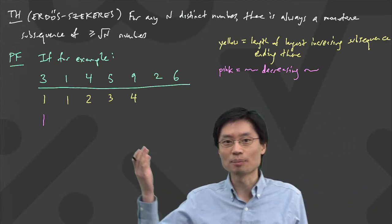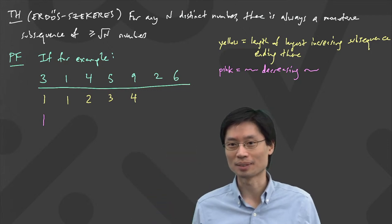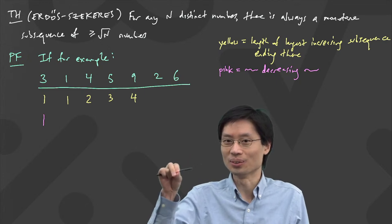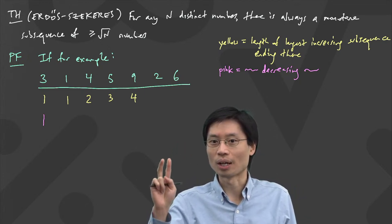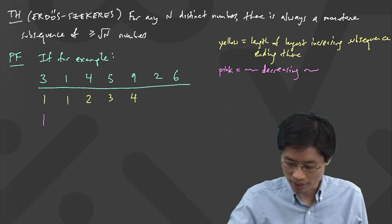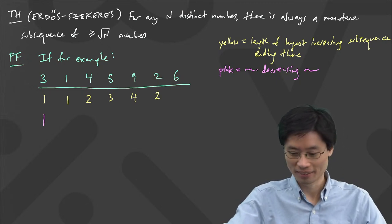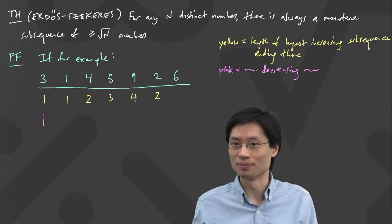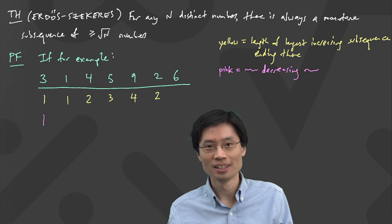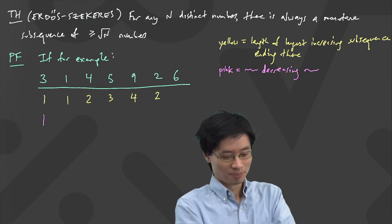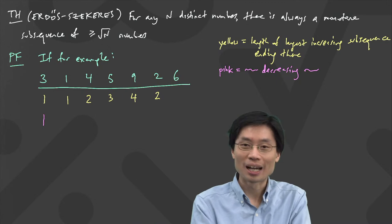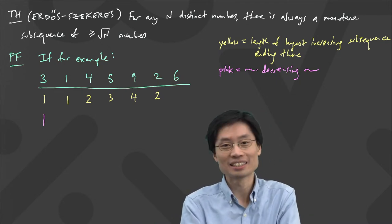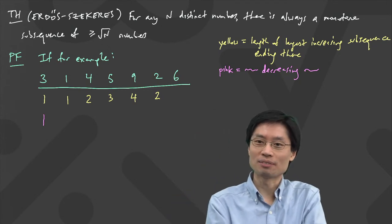The length of the longest increasing subsequence that ends at the two — here's where it becomes interesting. It's only two. You have to end at the two. The important thing is it ends at that number, that's why it's only two, not four. And then how about the six? It's a bit painful to manually go through and see how long a sequence ends at the six, so let's see if we can do this in a more clever way.